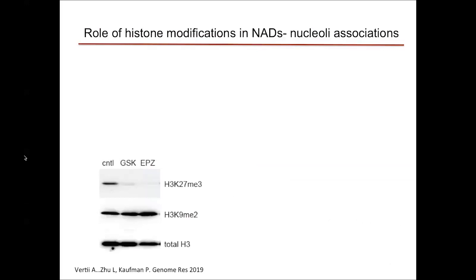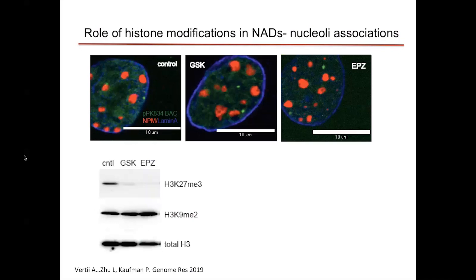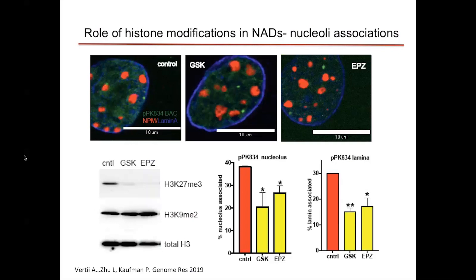To address this, we used EZH2 inhibitors — two different inhibitors — to reduce the level of H3K27me3. We then assessed whether this reduction in methylation marks would affect NAD integrity. In optical sections from MEF cells, nucleoli are shown in red, FISH probe in green, and lamin A in blue. In the presence of both inhibitors, we observed dissociation of NADs from both the nuclear periphery and nucleoli. Quantification shows a significant reduction in nucleoli association, confirming that H3K27me3 is important for NAD association with nucleoli.